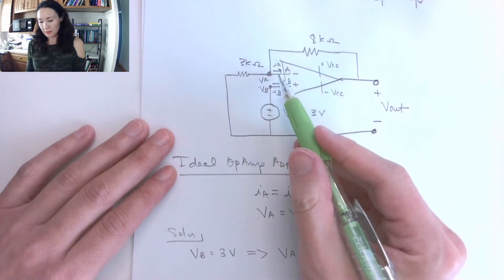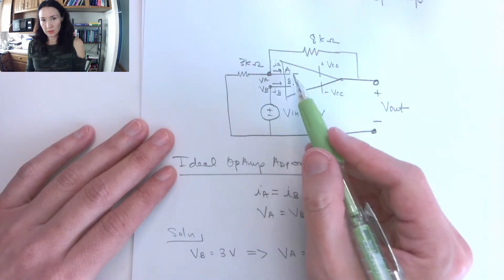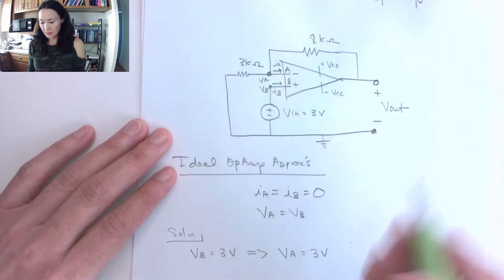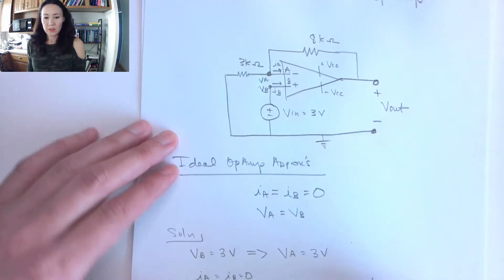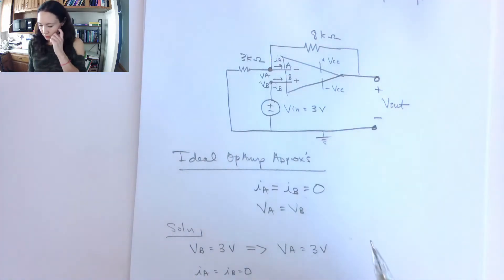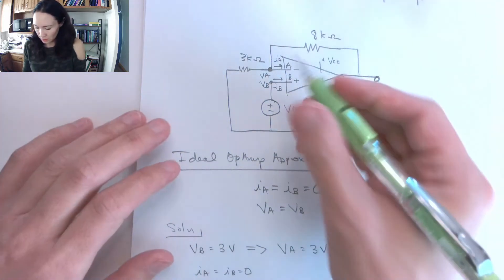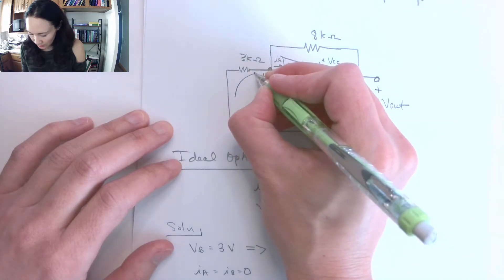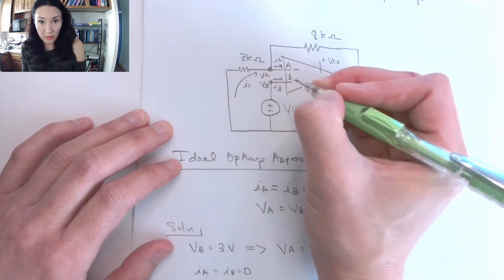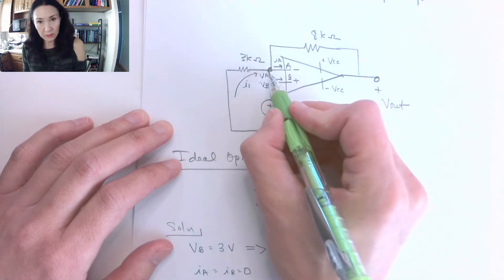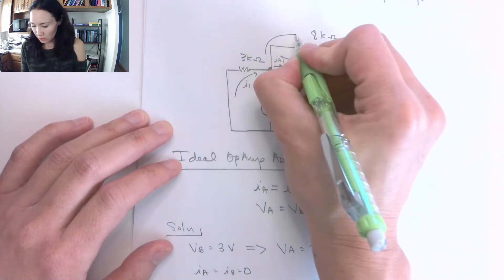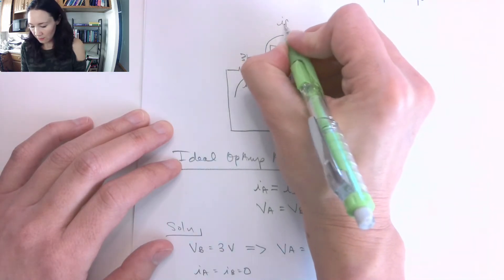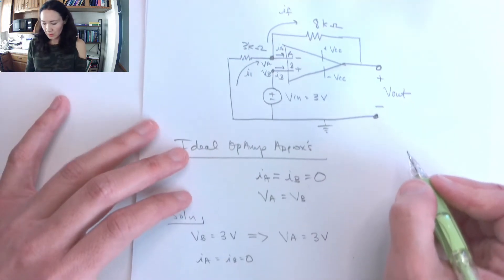So then also we know that since no current enters into this input, and no current enters into this input virtually, we have that IA is equal to IB is equal to zero. So we're going to use that when we are using node voltages. So let me label this current here. I'll call this I1, and then I1 is going to come to this node and split to IA, and then I'll label this current that takes this branch as IF because it takes the feedback loop.